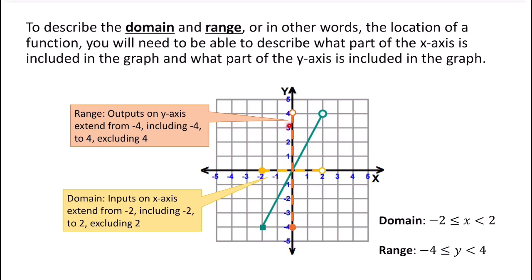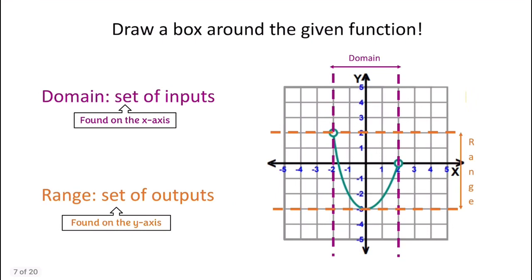The y values go from negative 4 to 4, so the range is negative 4 less than or equal to y less than 4. The negative 4 is included because of the filled-in circle, and the positive 4 is not included because of the open circle. My strategy for these problems is to draw a box around the given function. For the domain, I draw lines at the smallest and largest x values — that gives the boundaries of x. For the range, I draw lines at the smallest and largest y values. Together, those four lines put a box around the function. I only care about these endpoints — what the function is doing within the region doesn't matter.